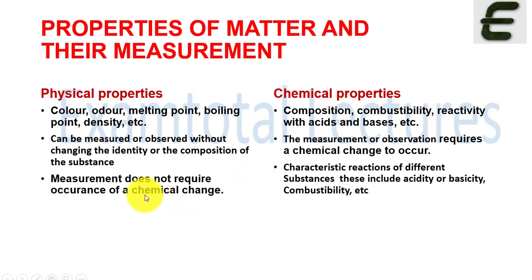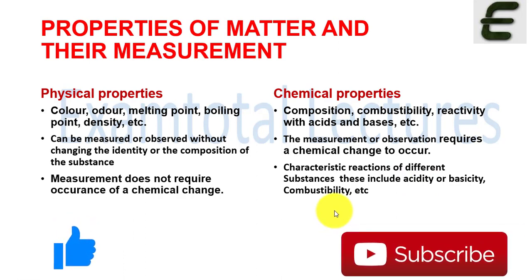In physical properties, the color may be different, melting and boiling point may be different, but there will be no change in the basic composition. While checking chemical property, there is a chemical change. In physical property measurement, it does not require occurrence of a chemical change. Chemical change is required to observe chemical properties, but here it does not require any chemical change - the block remains as it is, the substance we took remains as it is. So in chemical properties, characteristic reactions of different substances are included, such as their acidity, basicity, combustibility, and reactivity.